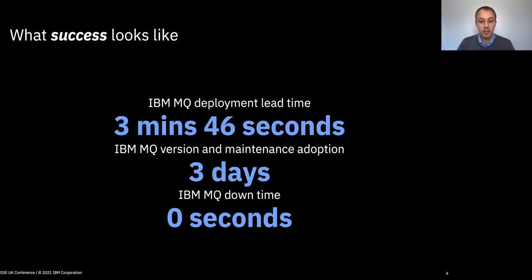One of the customer use cases we had is that you can build automation pipelines for your queue managers and deploy updates on new queue managers in quick periods of time. For example, you can deploy MQ queue managers in a matter of minutes and roll out new updates in a matter of days by building pipelines that automatically install updates on all your systems, restart containers, and by using multiple queue managers you can do all this without any downtime for your applications.